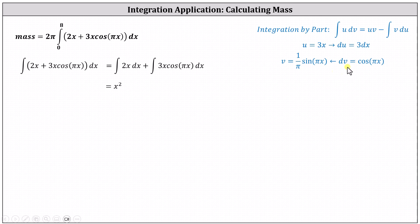To find v from dv, we integrate cos(πx), giving us v = (1/π)sin(πx). Let's show some more work on this part.